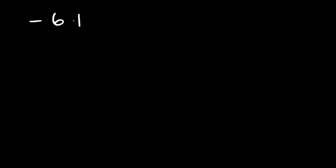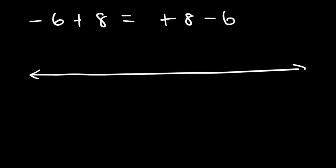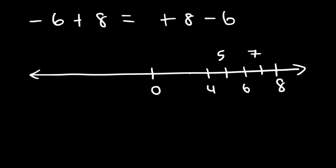Now you can reverse it. Negative 6 plus 8 is the same as positive 8 minus 6. So if we started at 8 and traveled 6 units to the left, the first one would be 7, then 6, 5, 4, 3, and 6 units to the left will take us to 2.